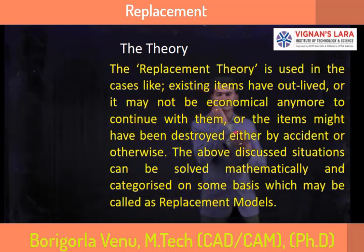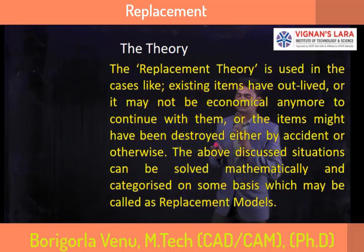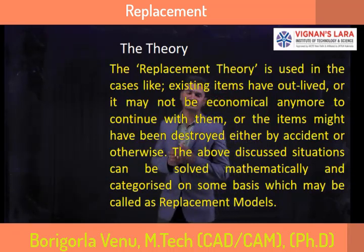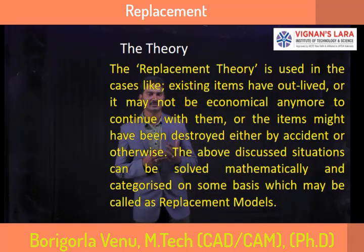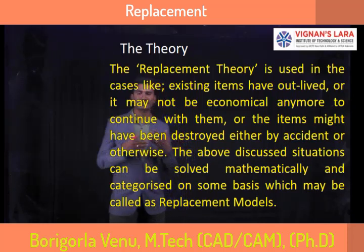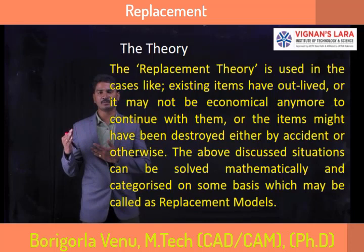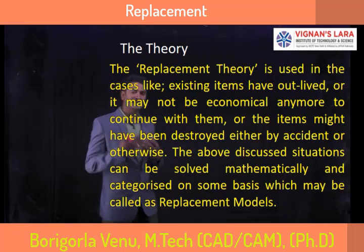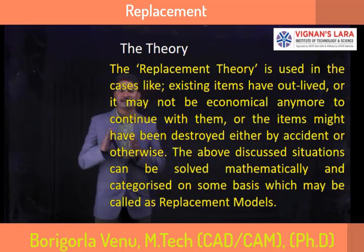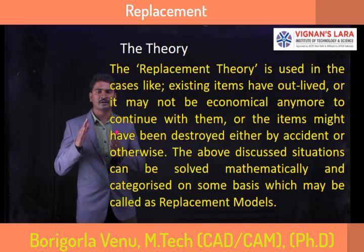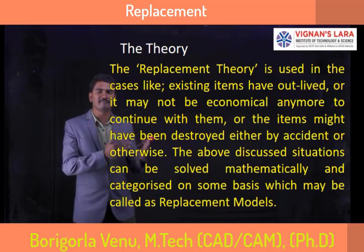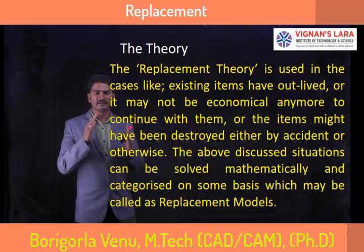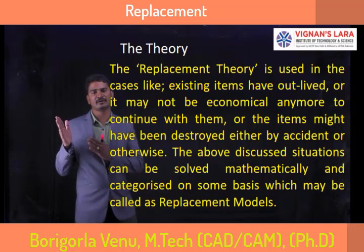Replacement is used in cases like when existing items have outlived their life. For example, if we purchase a mobile, they give a warranty of one or two years. Similarly, machines also have an expiry date. They give 5 years of warranty or service period for that machine. Based on usage and maintenance, it may last longer or fail sooner. With proper maintenance it will function well; otherwise it will fail suddenly and require more repairs.